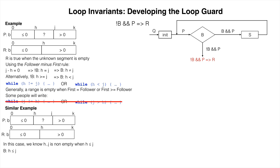So we write the loop condition, b, as h is at most j. This leads to the loop shell. Note that we could also use the follower minus the first rule here.